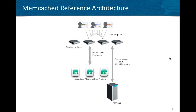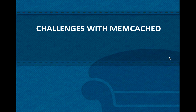A lot of you might be familiar with this architecture diagram. It shows a bunch of users using a browser sending requests to the application layer. The application layer sends read and write requests to the Memcached nodes, and in the case of cache misses or specific write requests, sends them to the RDBMS layer. This is a typical Memcached setup. Let's look at some of the challenges you might face with Memcached.